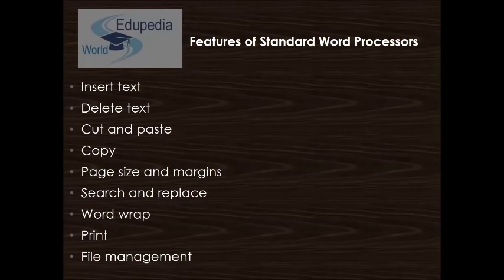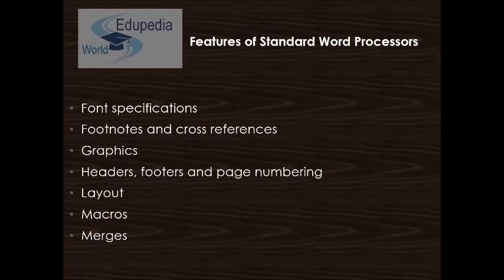Word wrap automatically moves to the next line when you have filled one line with text, and will readjust text if you change the margins. Print allows you to send a document to a printer to get a hard copy. File management provides capabilities that allow you to create, delete, move and search for files. Font specifications allow you to change fonts within a document — for example, you can specify bold, italics and underlining. Most word processors also let you change the font size and even the typeface.